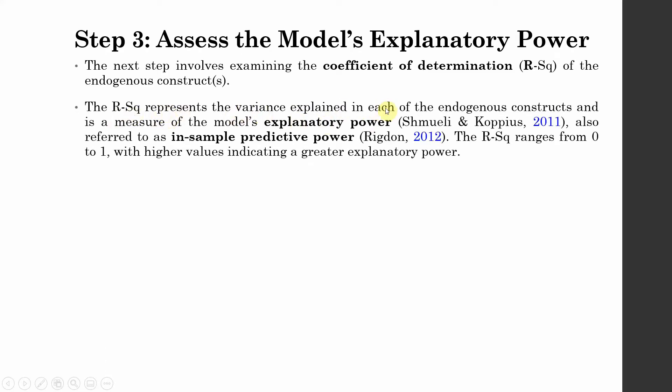The R-square represents the variance explained in each of the endogenous constructs and is a measure of the model's explanatory power, also referred to as in-sample predictive power. The R-square ranges from 0 to 1, with higher values indicating greater explanatory power.